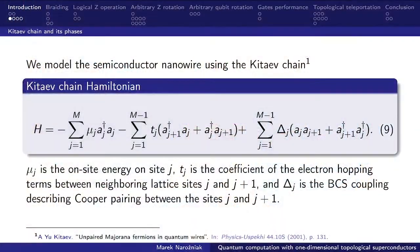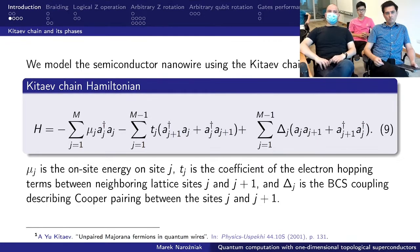And the physical model that is convenient for working with those 1D topological structures is the Kitayev model. The Kitayev chain Hamiltonian can be grouped into three kinds of terms: the on-site lattice terms parameterized by mu, electron hopping terms parameterized by T, and the BCS coupling terms parameterized by delta.